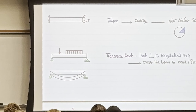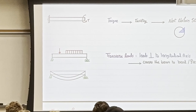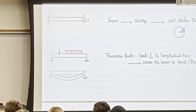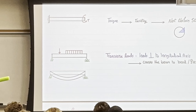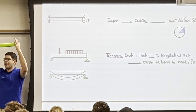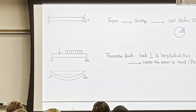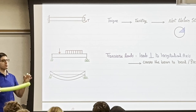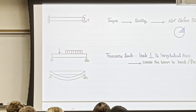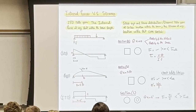In today's lecture we're going to speak about transverse loads — loads that are perpendicular to the longitudinal axis of the beam. The longitudinal axis is along the length of the beam, and loads perpendicular to that are called transverse loads. When we apply a transverse load on the beam, it's going to bend the beam — not twist it or elongate it. Another word for bending is flexure, so bending stress and flexure stress mean the same thing.